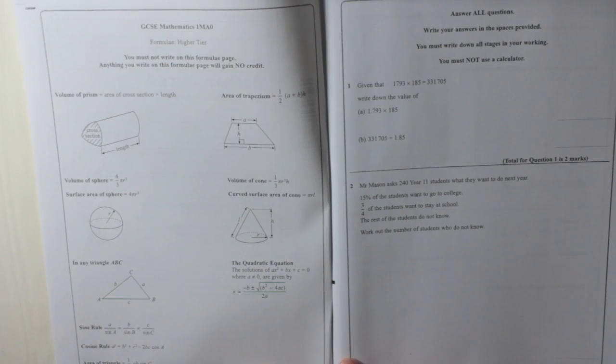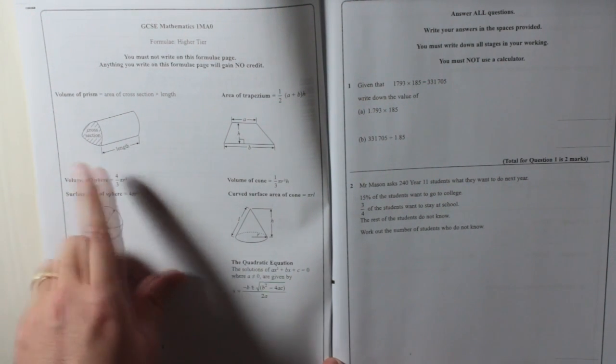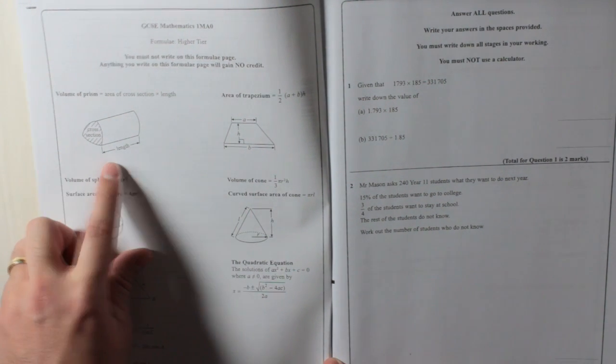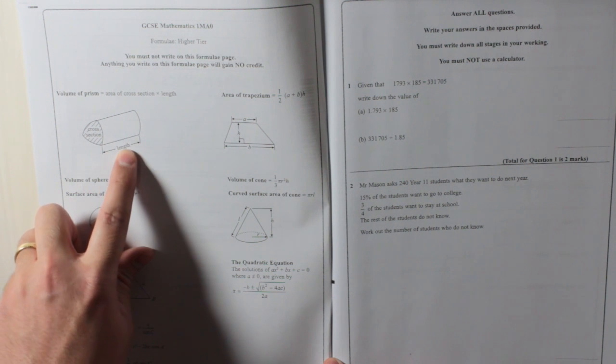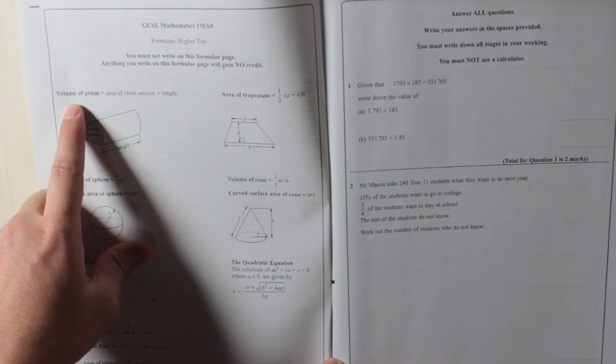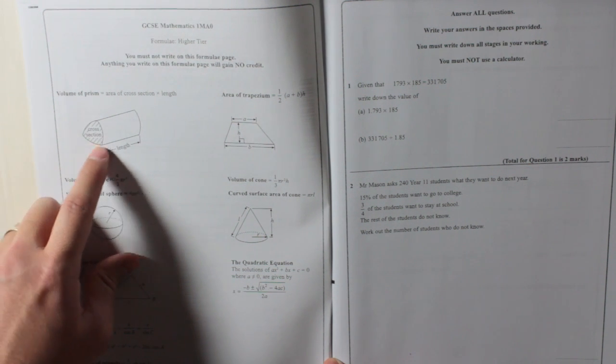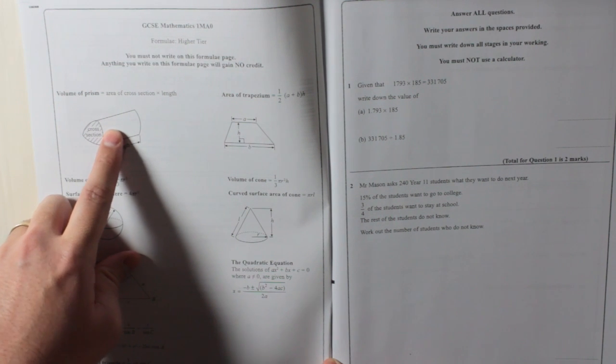Let's first have a look at what formulas you get. Cross-section times by length. Volume of any prism. If you know the area, multiply it by the length, you'll get the volume of the prism.